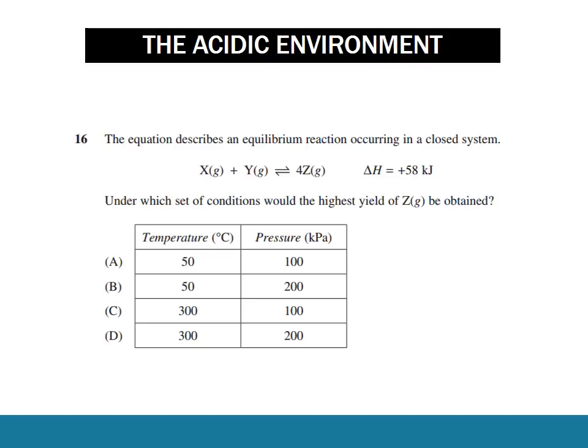Let's look at a common example. We have two gases X and Y forming a third gas Z, and we want to find the highest yield of Z. We know there are more moles of gas on the left-hand side than the right, so we want low pressure to shift the equilibrium towards the right. So the answer is either A or C. We also know that the reaction is endothermic because the substances absorb heat moving forward, which means we want high temperatures. So the answer is C.